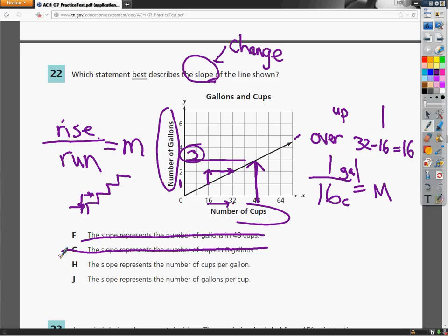Now H says the slope represents the number of cups per gallon. If you see that word per there, that's a good thing. That means things are changing because I could change one number. And as long as it goes up by the same proportional amount, the other number will match itself.